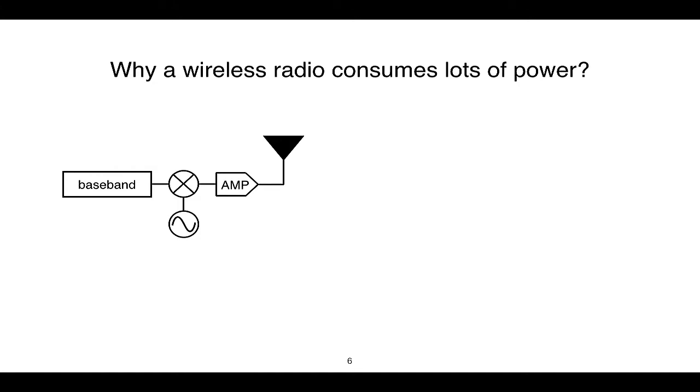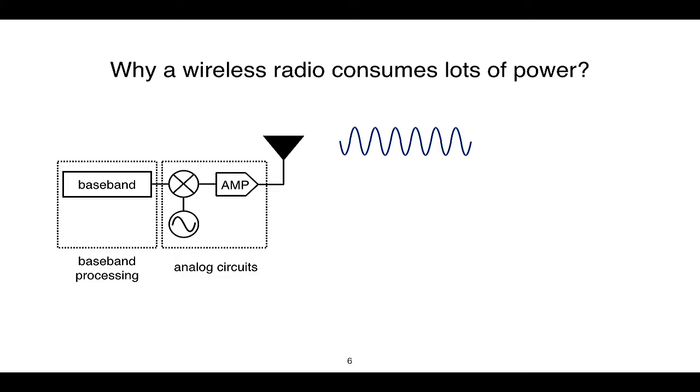So that's our goal: how to design such a radio. To answer this, let's look at why wireless radios consume lots of power. The fundamental reason is that when a wireless radio transmits data, it has to generate a signal. Generating a signal introduces two power-hungry components: complicated digital baseband processing and power-hungry RF analog circuits. That's the fundamental reason why wireless radios today consume lots of power for communicating data.